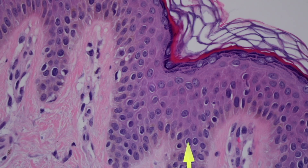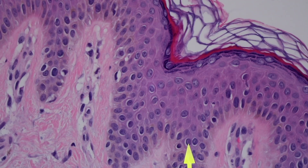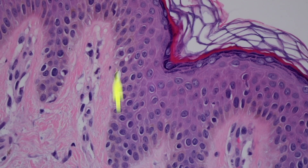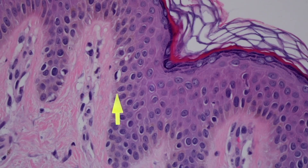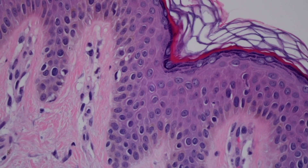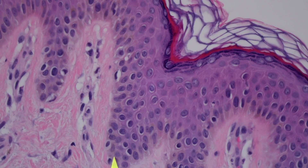So when you see vacuoles in the epidermis and you're trying to decide if it's a keratinocyte or a melanocyte: if they have the little halo right around the nucleus, it's probably a keratinocyte. If the nucleus has a little blob of spidery cytoplasm around it, it's probably a melanocyte. So these two cells here are melanocytes, and normal melanocytes live along the basal layer.